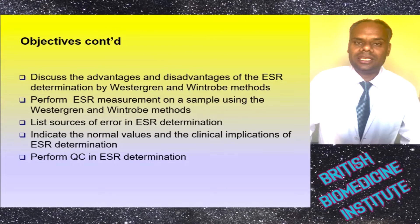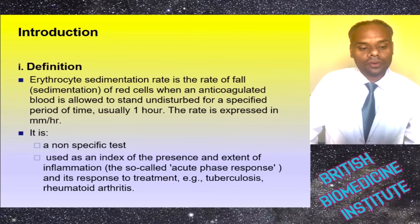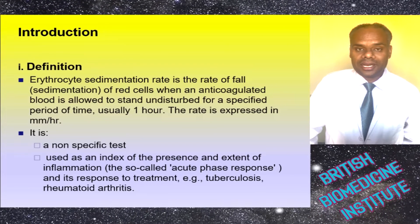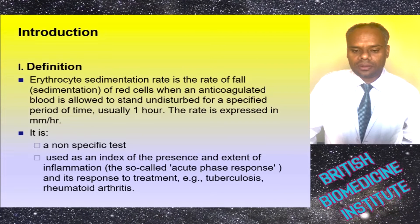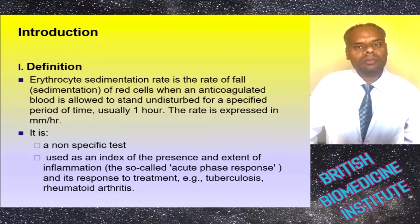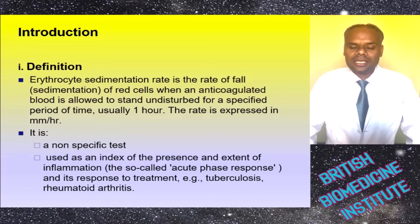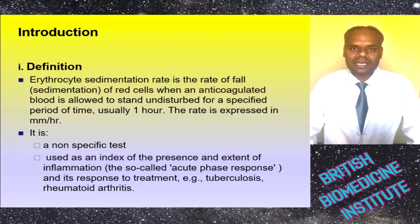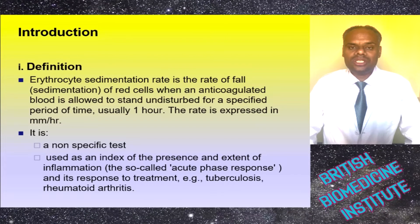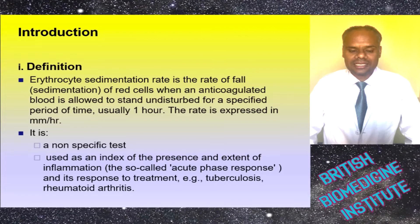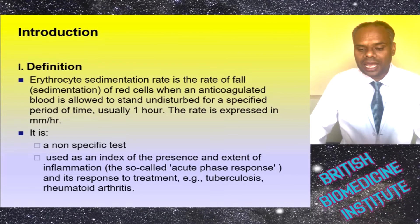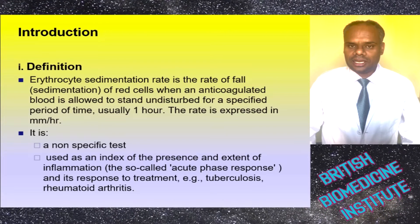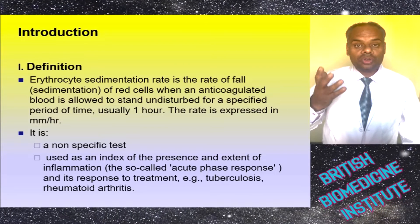ESR is the rate of fall or sedimentation of red blood cells when anticoagulated blood is allowed to stand undisturbed for a specific period of time, particularly one hour. The rate is expressed in mm per hour. It is a non-specific test used as an index of the presence and extent of inflammation, or acute phase response, and it responds to treatment — for example, TB (tuberculosis) or RA (rheumatoid arthritis).